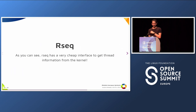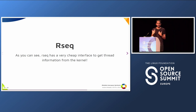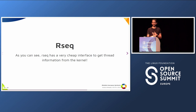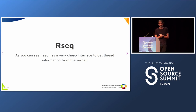So as you can see, RSEQ has a very cheap interface to get thread information from the kernel — and this is what we need. RSEQ creates a data structure that can be read and written both by the kernel and user space, and reading a structure is way cheaper than messing with syscalls.